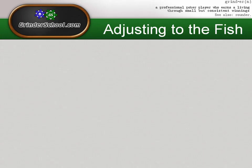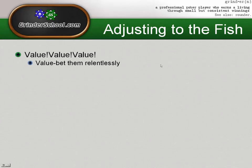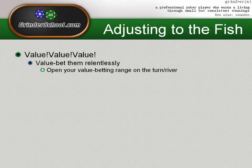There are many ways to adjust to the fish and this should be the easiest person to adjust to, but I see way too many people playing flat out incorrectly against them. The first thing is going to be value, value, value. We want to get value out of players who have way too wide and weak of a range and call down way too light — value bet them relentlessly. This includes opening our value betting range on the turn and river. Hands we might typically pot control against a tag or lag, we're certainly going to want to continue bet-bet-bet against the fish. Even on four-flush boards where we have the fourth nut flush, there are just a lot of spots where these fish are going to call down way too light and we can value bet thinly against them.